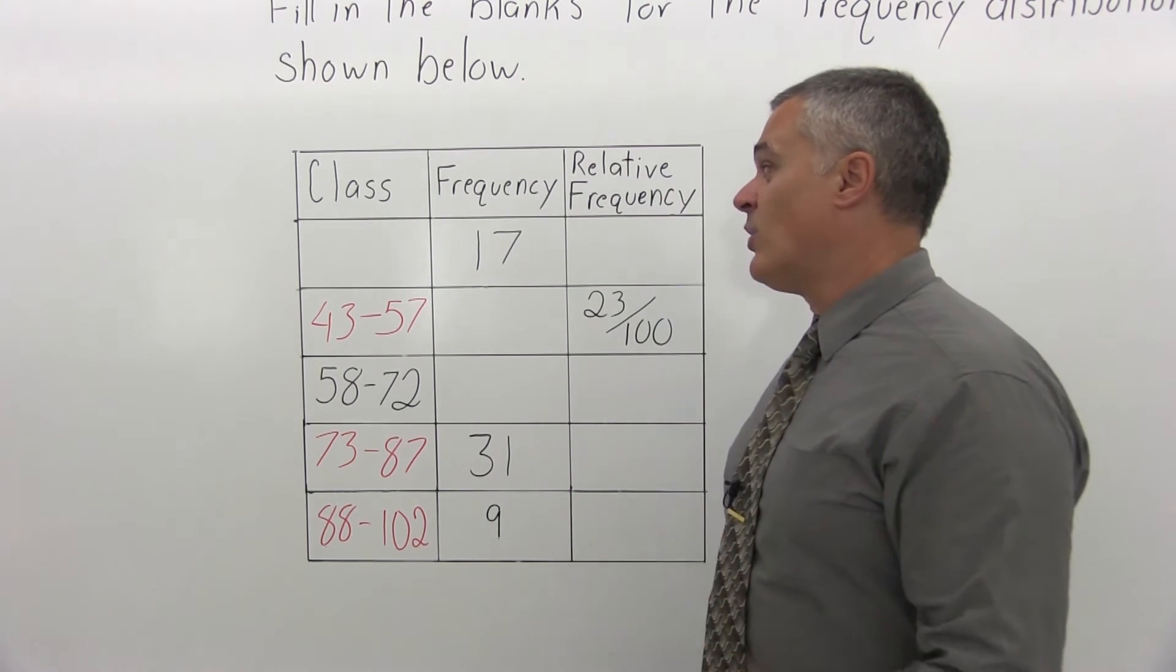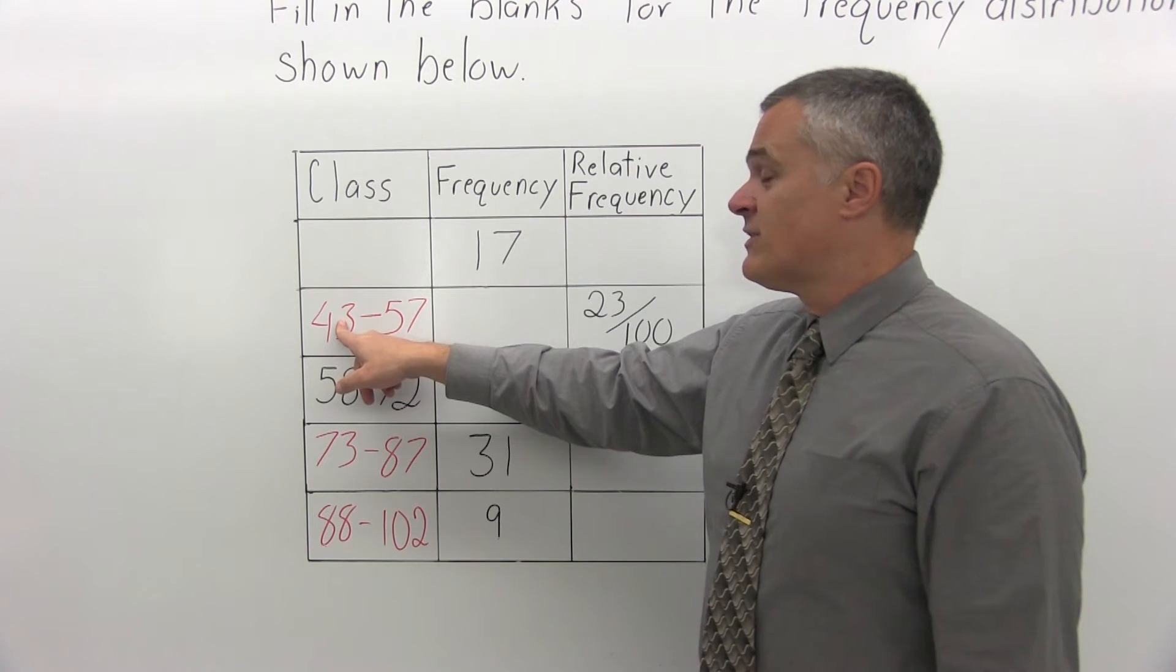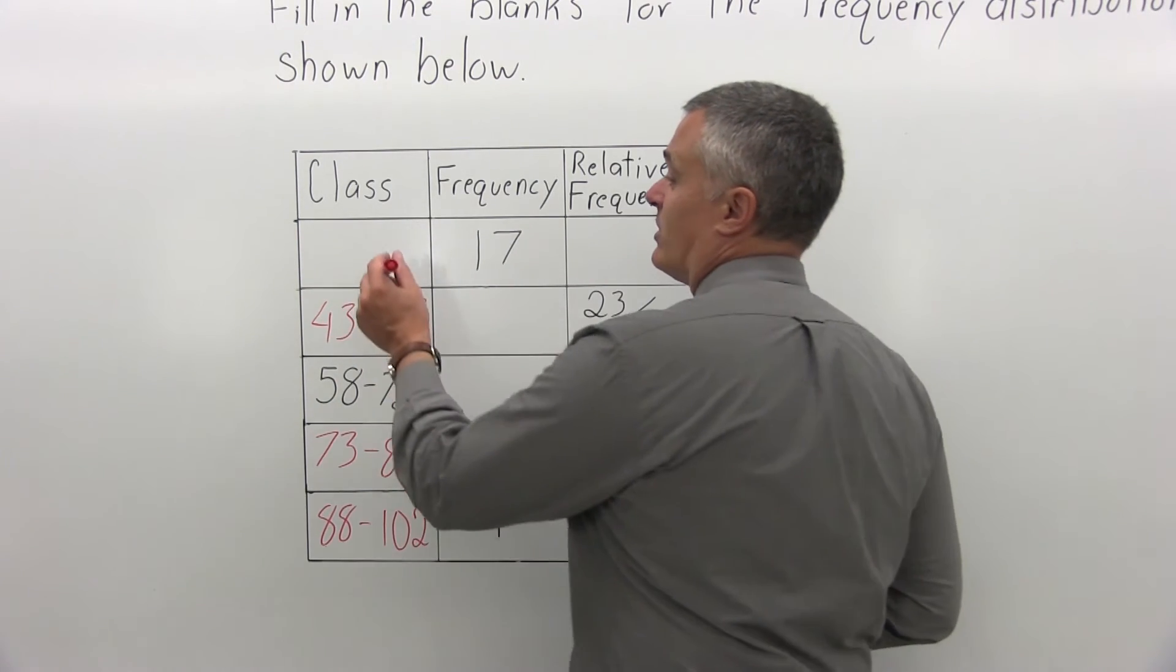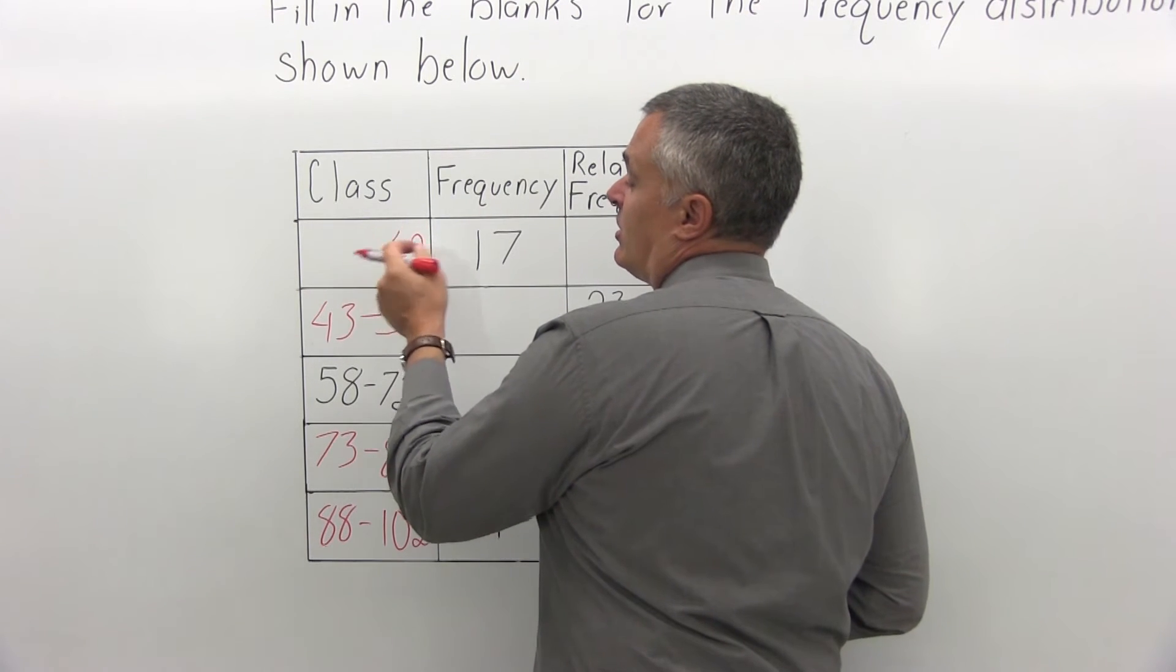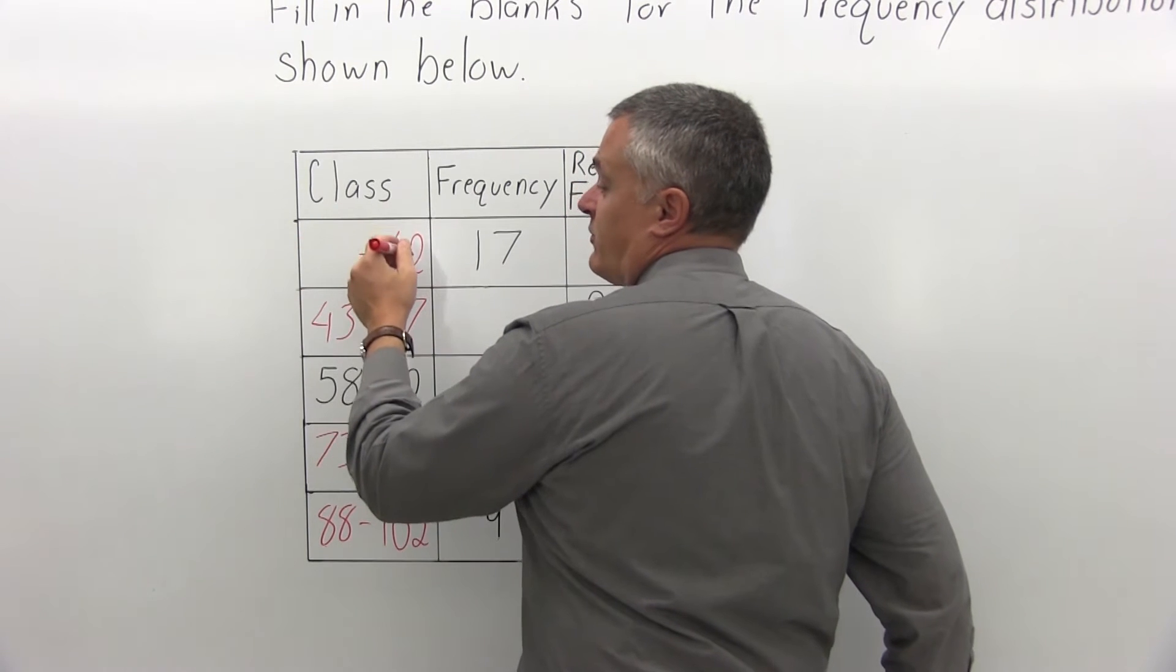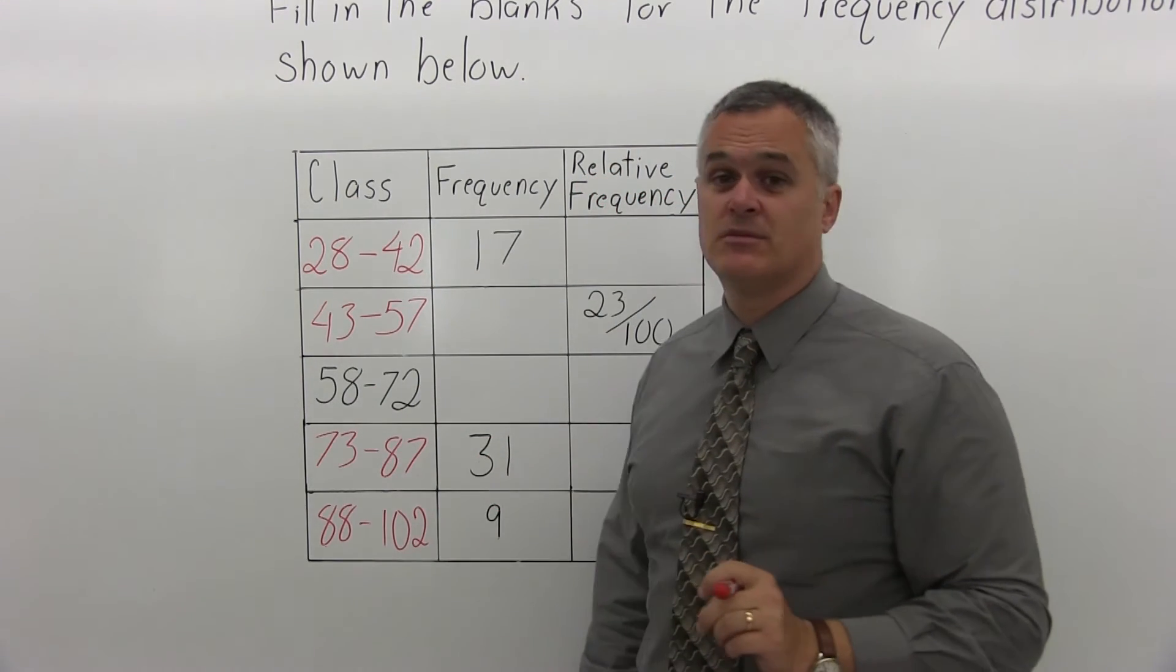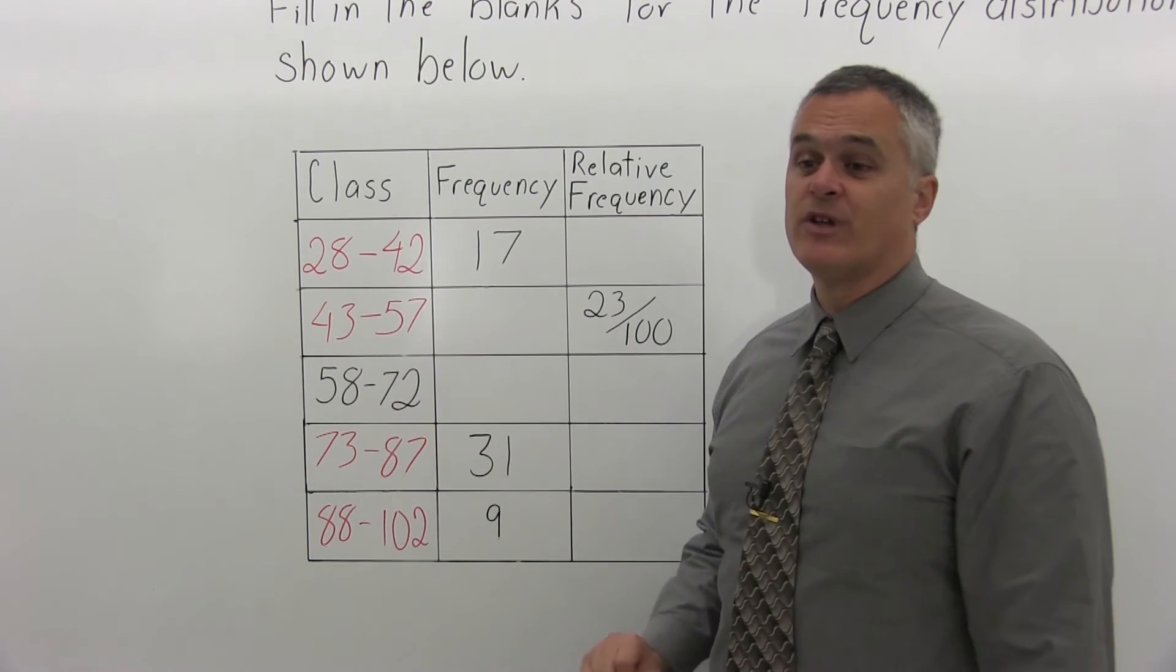And there's still one blank class, so same process. The class that I just figured out begins at 43. So the one before must end only slightly less. It would end at 42. So the beginning point of the class, or lower class limit, would be whatever number plus 14 would make me end at 42. Well, 28 plus 14 is 42. So now I have all the classes filled in.